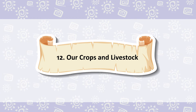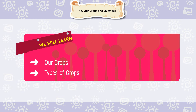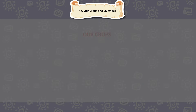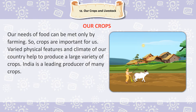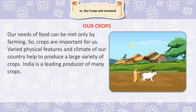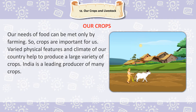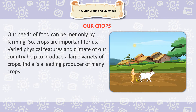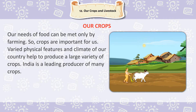Chapter 12: Our Crops and Livestock. We will learn about our crops, types of crops, and our livestock. Our needs of food can be met only by farming, so crops are important for us. Varied physical features and climate of our country help to produce a large variety of crops. India is the leading producer of many crops.